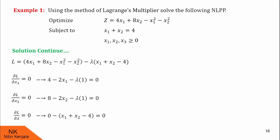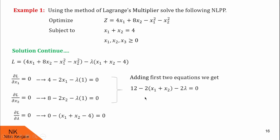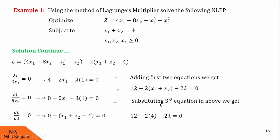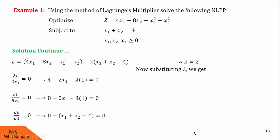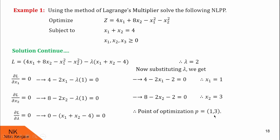Adding the first two equations gives 12 − 2(x1 + x2) − 2λ = 0. From the third equation, x1 + x2 = 4, so 12 − 2(4) − 2λ = 0, which gives 4 − 2λ = 0, so λ = 2. Substituting λ = 2 into equation 1: 4 − 2x1 − 2 = 0, giving x1 = 1. From equation 2: 8 − 2x2 − 2 = 0, giving x2 = 3. The stationary point is p = (1, 3).